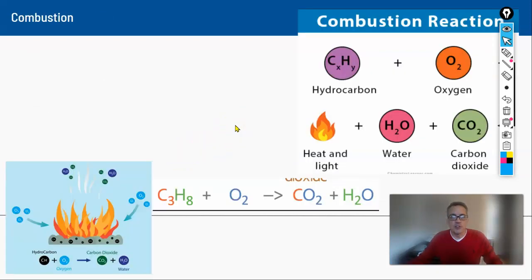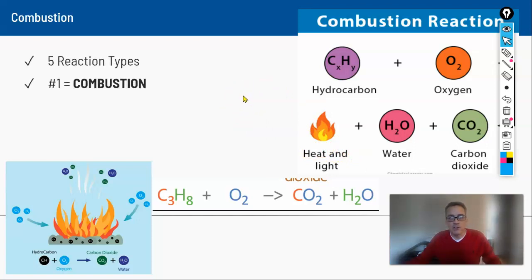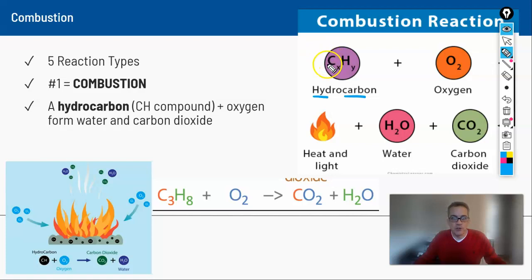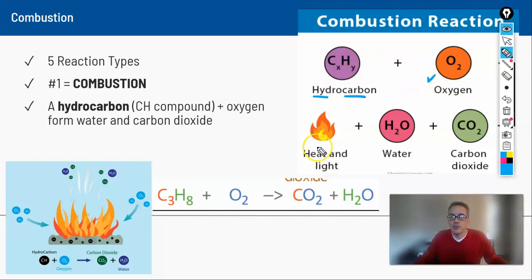There are five types of chemical reactions we need to be able to classify. The first is combustion — think of combustion as burning. To burn, we need a hydrocarbon, which contains hydrogen and carbon. Hydrocarbons can be gasoline, natural gas, fat, a candle — anything with a combination of carbons and hydrogens. When something burns it reacts with oxygen and gives off heat.